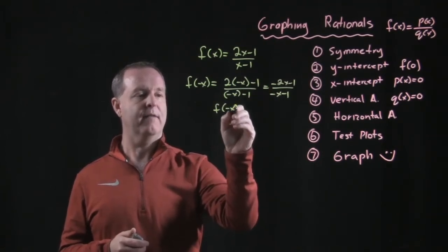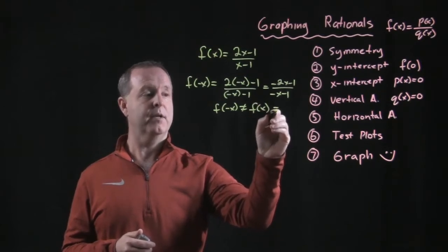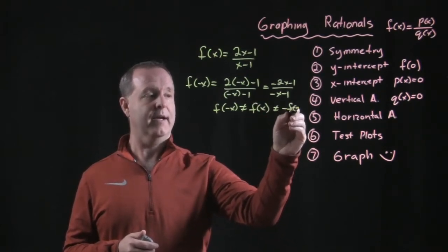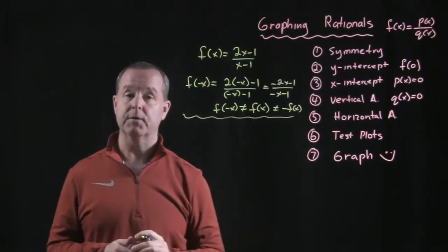So let's say this, f of negative x does not produce f of x, nor did it produce a negative f of x. Remember symmetry. So step one, there's no symmetry.